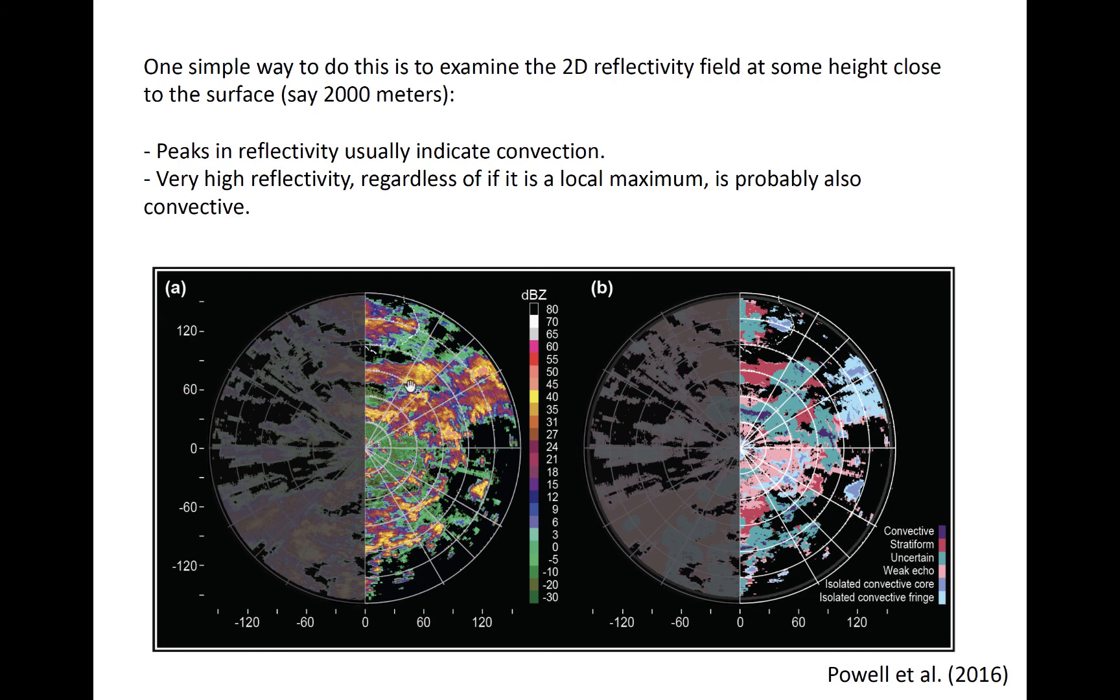In this image, example reflectivity is shown here at the left and the corresponding rain type classification, objectively determined, for the same echoes as illustrated at right.